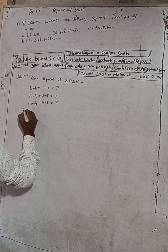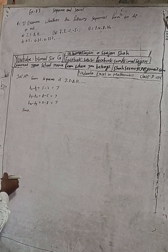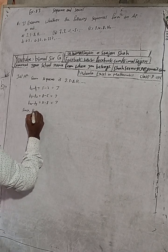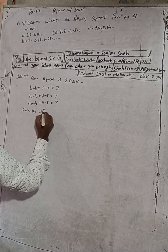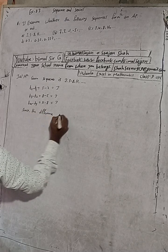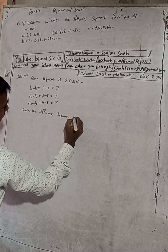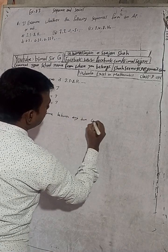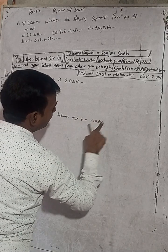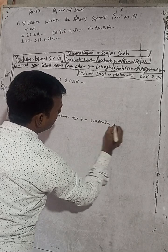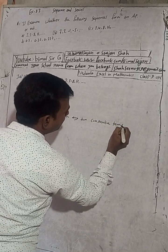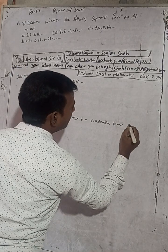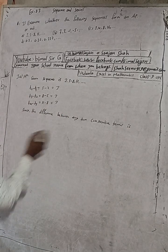Since the difference between any two consecutive terms is the same — equal — the given sequence is an arithmetic progression.